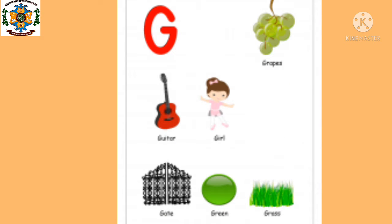G — guitar, gate, girl, green, grapes, grass.